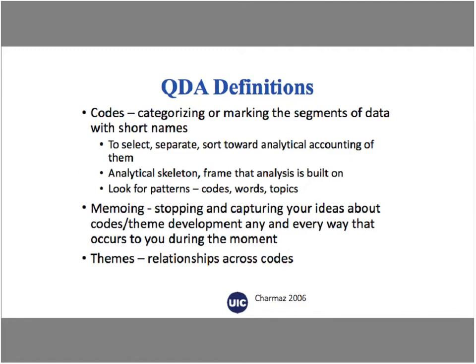I'm going to define three important things in qualitative data analysis: codes, memos, and themes. Codes help us to categorize or mark segments of the data with short names. Think of our data as pages of text from a transcribed interview. A code is a way to select, separate, or sort the data toward analytical accounting of it. Charmaz writes about building an analytic skeleton of the data — we need a frame on which the analysis can be built. The codes are words or sets of words that help us to look for patterns.